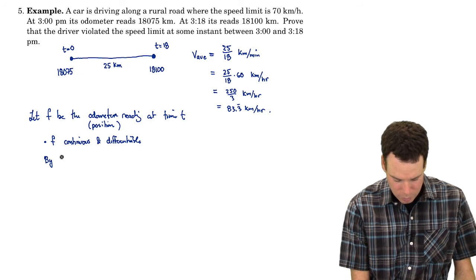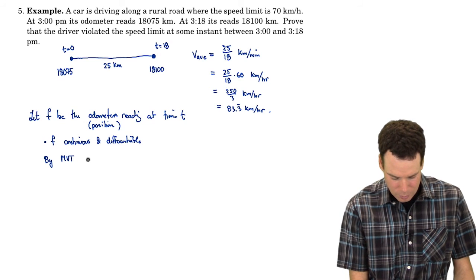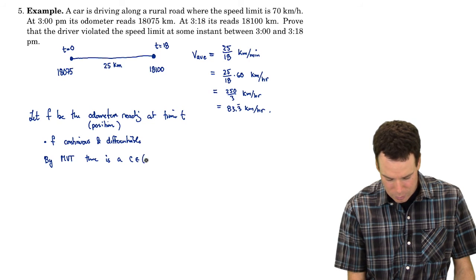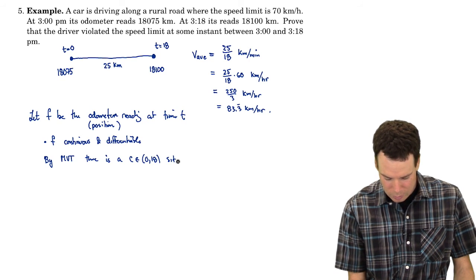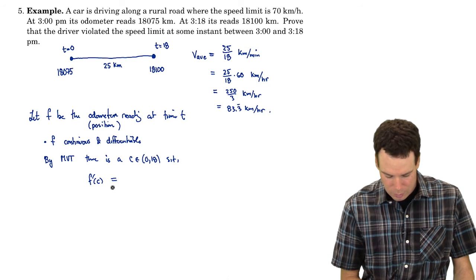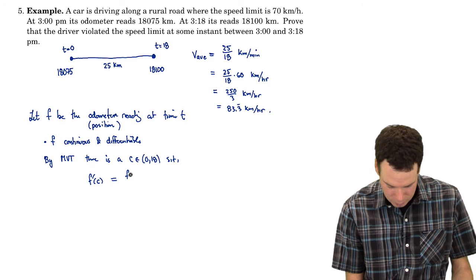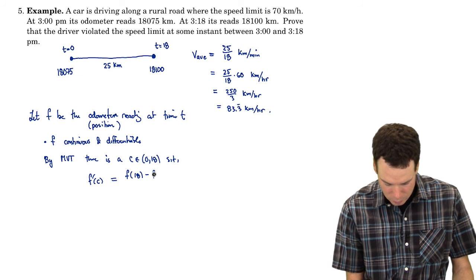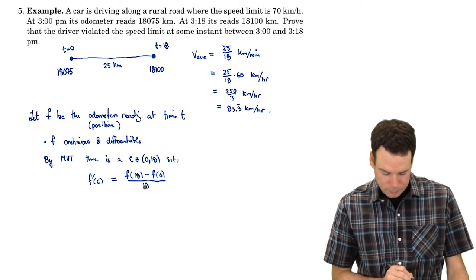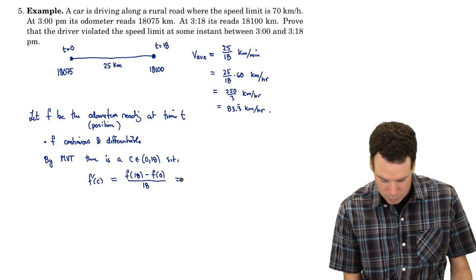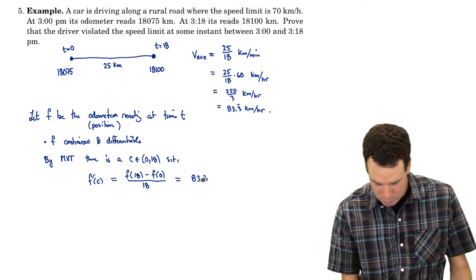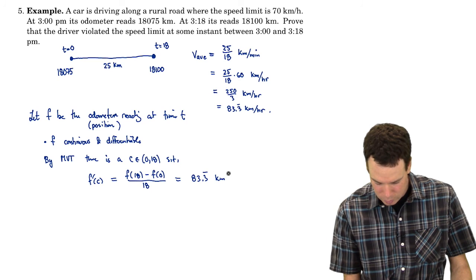So by the mean value theorem, there is a c in the interval from 0 to 18 such that the instantaneous velocity f'(c) is equal to the average velocity: (f(18) - f(0)) / 18. And this we already worked out. This is our average velocity we worked out, 83.3 kilometers per hour.